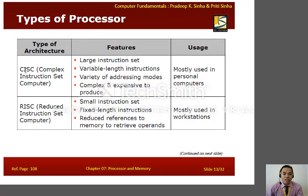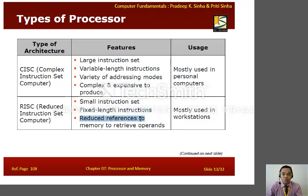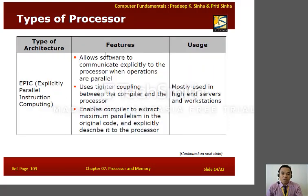There are several types of processors. The complex instruction set computer, or CISC, features large, variable-length instruction sets, is complex and expensive to produce, and is mostly used in personal computers. The reduced instruction set computer, or RISC, has a small instruction set, fixed-length instructions, and reduced references to memory or retrieval operations; these are mostly used in workstations. Explicitly parallel instruction computing, or EPIC, allows software to communicate explicitly to the processor when operations are parallel and uses tighter coupling between the compiler and the processors; these are mostly used in high-end servers and workstations.